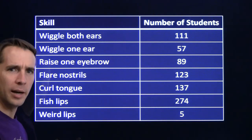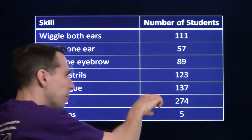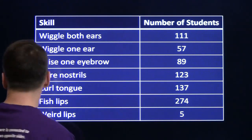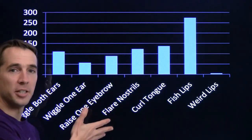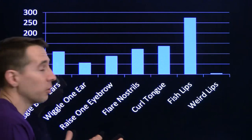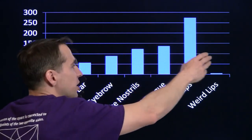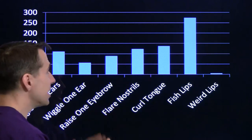But if all we really care about is the order, don't care about the exact numbers here, there's an even faster way to look at these data. We can do this. This is a bar chart, or you call it a bar graph. There's one bar for each skill. And we can just glance at this and see immediately.